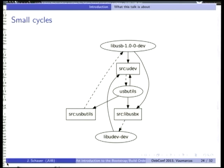You can identify small cycles, which is particularly useful because self-cycles have only one way to be split. For example, here we see that udev build-depends on usbutils, and this two-cycle can only be broken by removing that build dependency, because you can't break the binary dependency of usbutils on something that source udev builds. As a matter of fact, for this graph, removing that one edge solves the whole graph. So the first thing you want to do is look at all these small cycles.